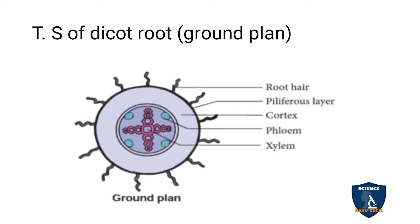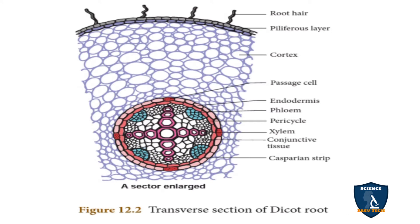This is the ground plan — they may ask this in 2-mark or 4-mark questions. You can see the root hair. This is the root hair and this is the epidermal structure, that is the piliferous layer. This portion is the cortex and this is the stele. In the stele you can see xylem and phloem alternating. Now we will see in detail. The piliferous layer is otherwise known as epiblema or rhizodermis, and it is made up of a single layer.